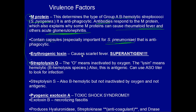Erythrogenic toxin causes scarlet fever and this is a superantigen. A superantigen attaches to MHC2 and T cell receptors and causes an immune response by increasing IL-1, IL-2, and tumor necrosis factor. The erythrogenic toxin causing scarlet fever is specific to streptococcus pyogenes. Streptolysin O — the O stands for oxygen — is inactivated by oxygen, and it is what causes the beta hemolysis. It lyses blood cells in the blood agar and it is antigenic.